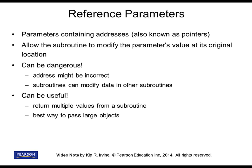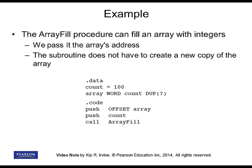Passing large objects to subroutines like arrays is much more effective if you pass their addresses. Here's an example from the book. We have a procedure called array fill that's going to fill up an array with integers, and here you can see how we're calling it. We have an array called array, we push its offset on the stack, push a second parameter called count that tells us how many values are in the array, and then call array fill.